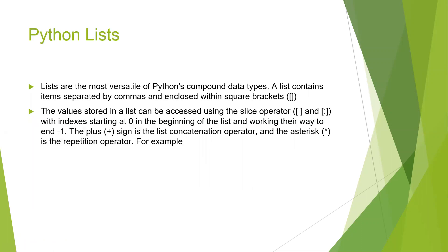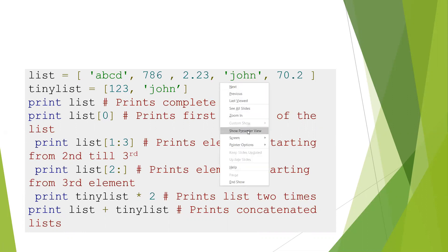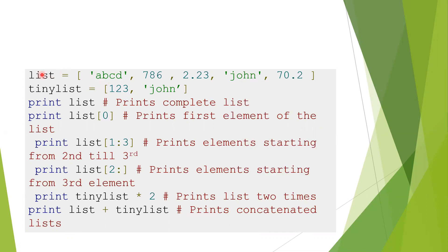Now next is list. List means it's a combination of different objects and different items. A list is created using square brackets. Suppose we have created one list: A, B, C, D, 7, 86, 2.23, John, 70.2. This list is a combination of different items — it can be string, integer, float, anything. We've also created another list called 'tinny list'. If you write print(list), the whole list will be printed.